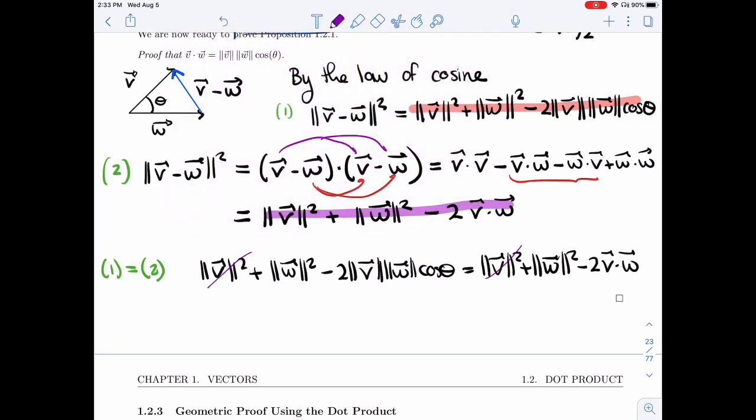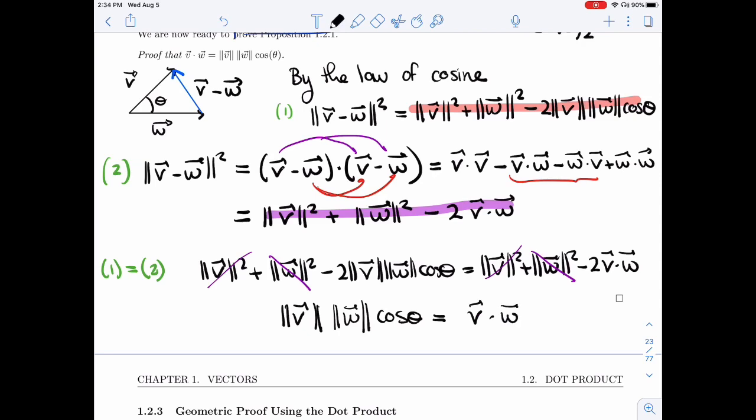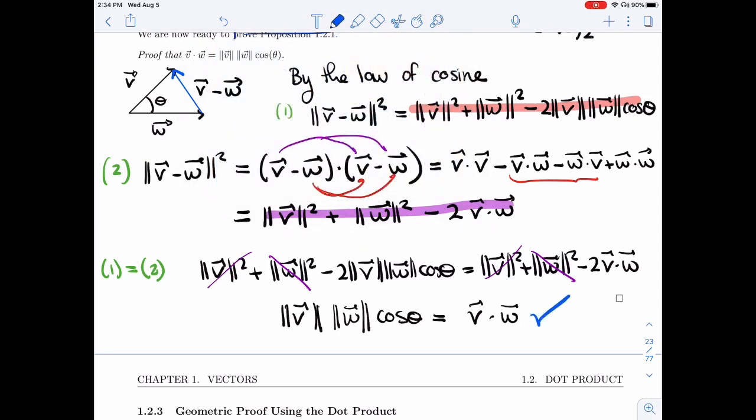Length of V squared is on both sides, I can get rid of it. Length of W squared is on both sides, I can get rid of it. So what I end up with, I can even simplify a bit more. I have minus 2 on both sides, I can get rid of that. So what I end up with is length of V, length of W cosine theta is equal to V dot W. And that's what we wanted.